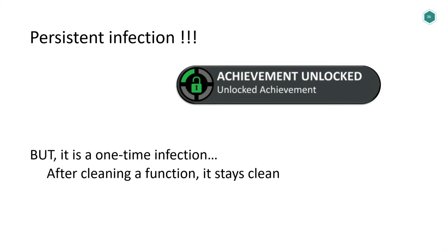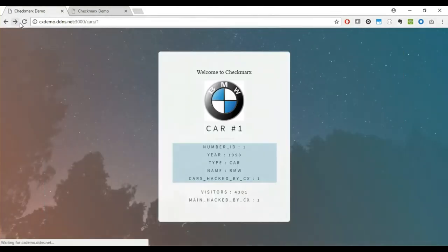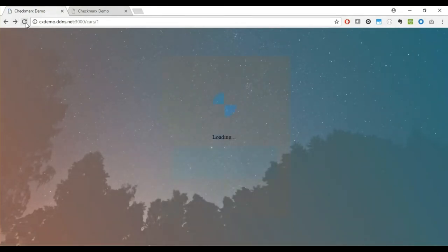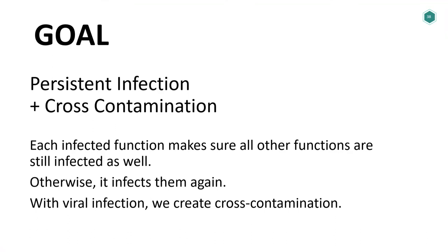This is great, but it's a one-time infection — not really what we call a virus or viral infection. If the function is cleaned or updated it stays clean, and we don't want to reinfect manually every time. We implemented a reset function: when we reset cars, we can see main is still infected but cars is not. So our new goal became persistent infection and cross-contamination — where each function checks all other functions, ensures they're contaminated, and reinfects if they're not.